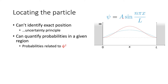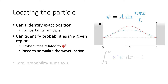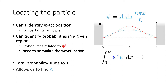We find the probability related to the square of the wave function, and the normalization constant is vital in this. We can find the normalization constant from the total probability of finding the particle in the box — it has to sum to 1, which allows us to find A.